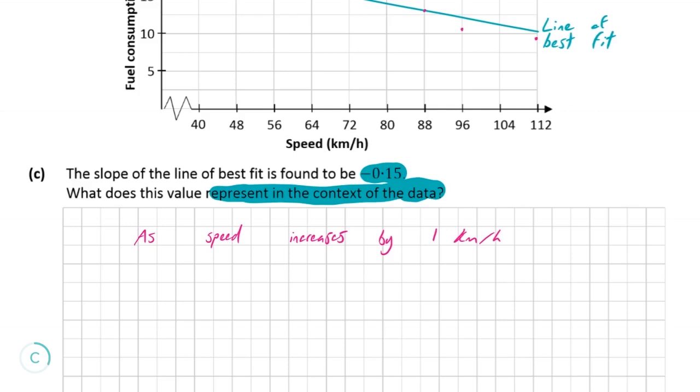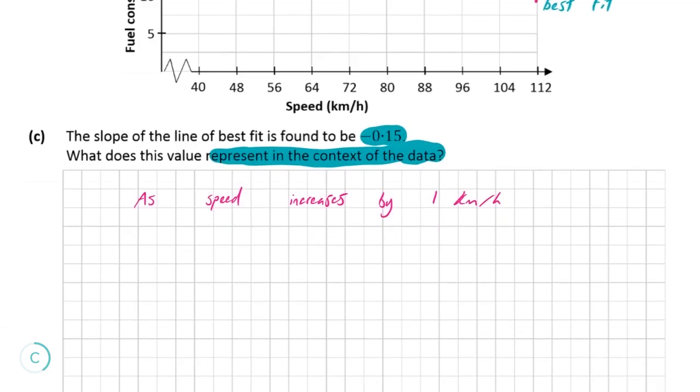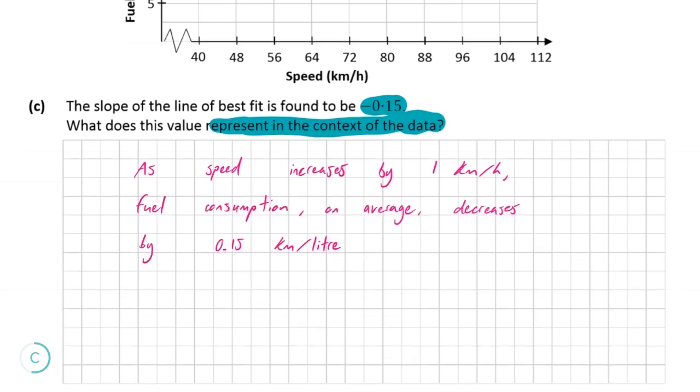So we're going to just write this in terms of what happens for each kilometer per hour. So as the speed increases by one kilometer per hour, or as we take one increment across in the x direction, we can say that the fuel consumption decreases by 0.15 kilometers per liter. And that's sort of why the slope is minus 0.15.